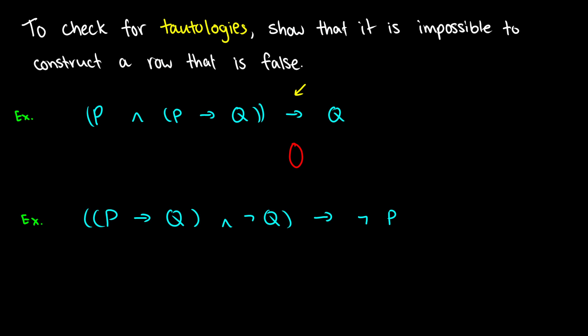So how do we do this? Well, this is a zero for a conditional. What does that mean? That means if we have a conditional, the only time a conditional is false is if we have 1→0. So, what this means is if the conditional here is false, q must be zero, and p ∧ (p→q) must be true. So, we could put a true under the 'and' here. Now, what about this 'and' here? We're done with q on the right. We have a value for q now, so we can keep track of this. We've determined that q is false.